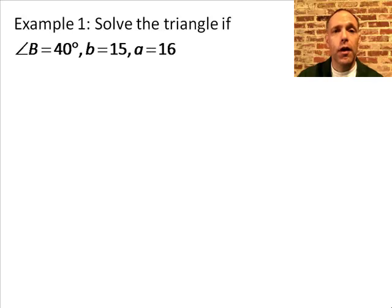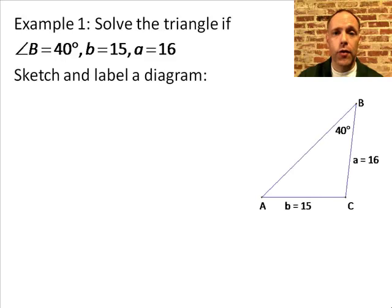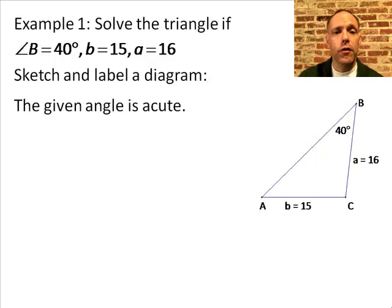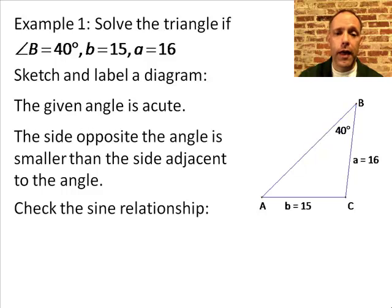In our first example, we're going to solve a triangle where angle B measures 40 degrees, side b is 15, side a is 16. Before I try to solve the triangle, I always want to sketch the diagram and put everything that I'm given where it's located, so I can see how they all relate to each other. Now looking at the diagram, the first thing I notice is that that angle is an acute angle.